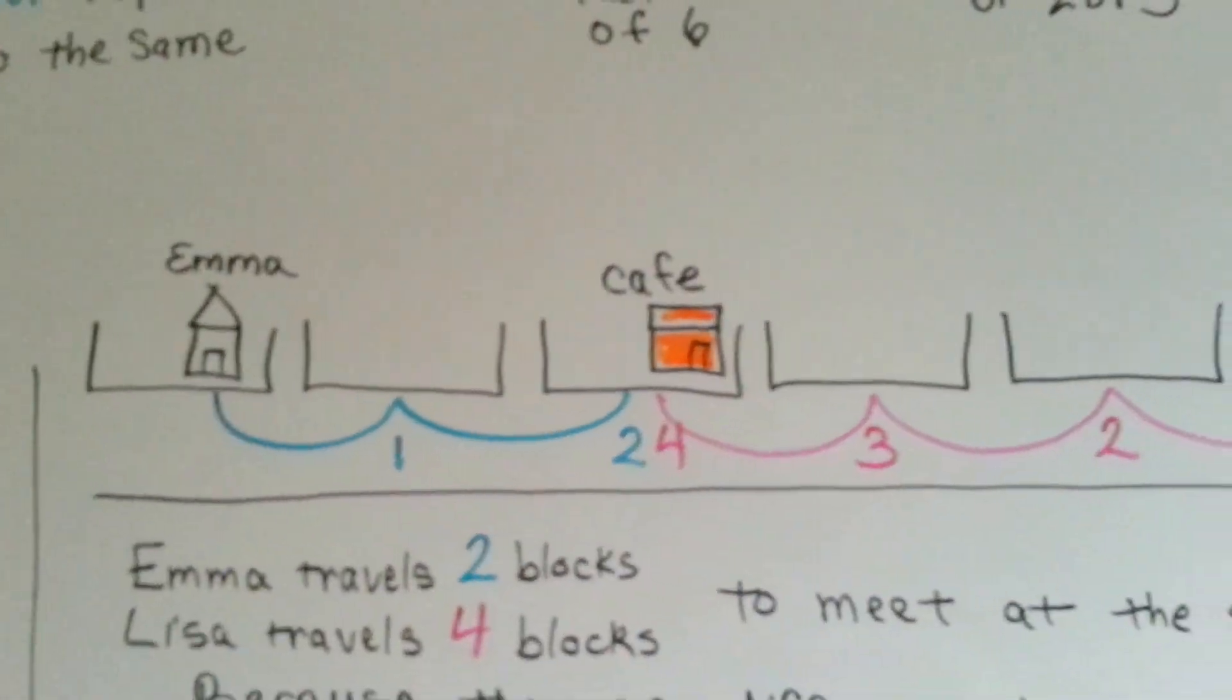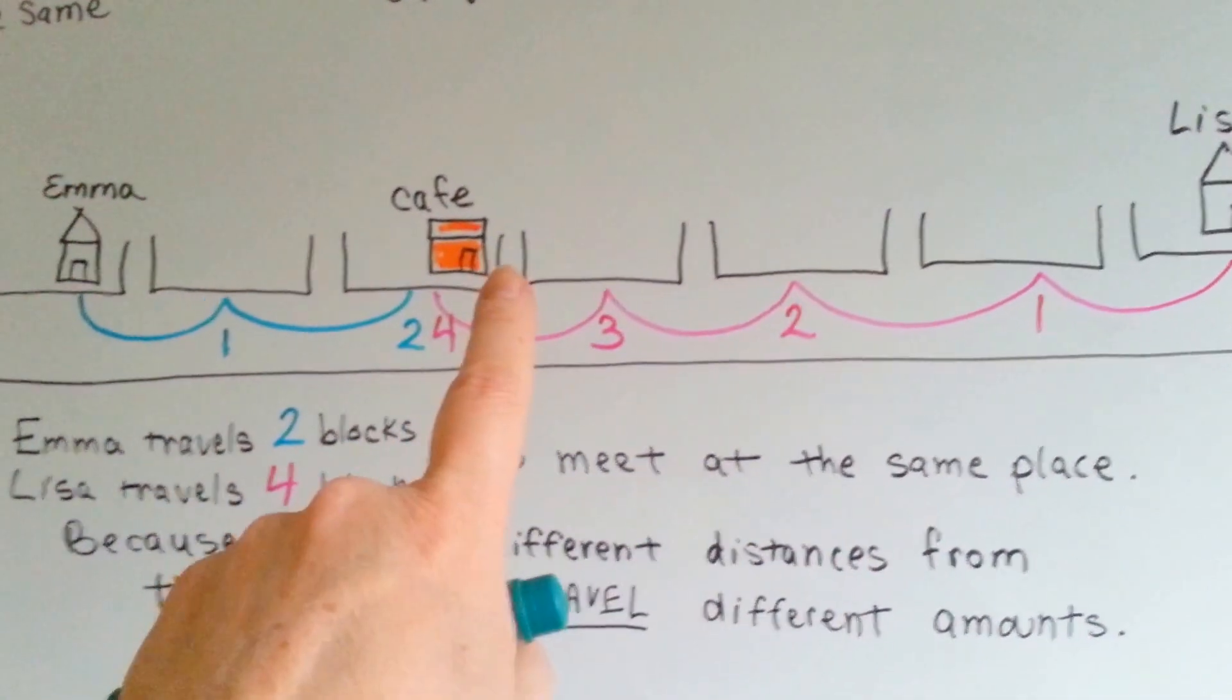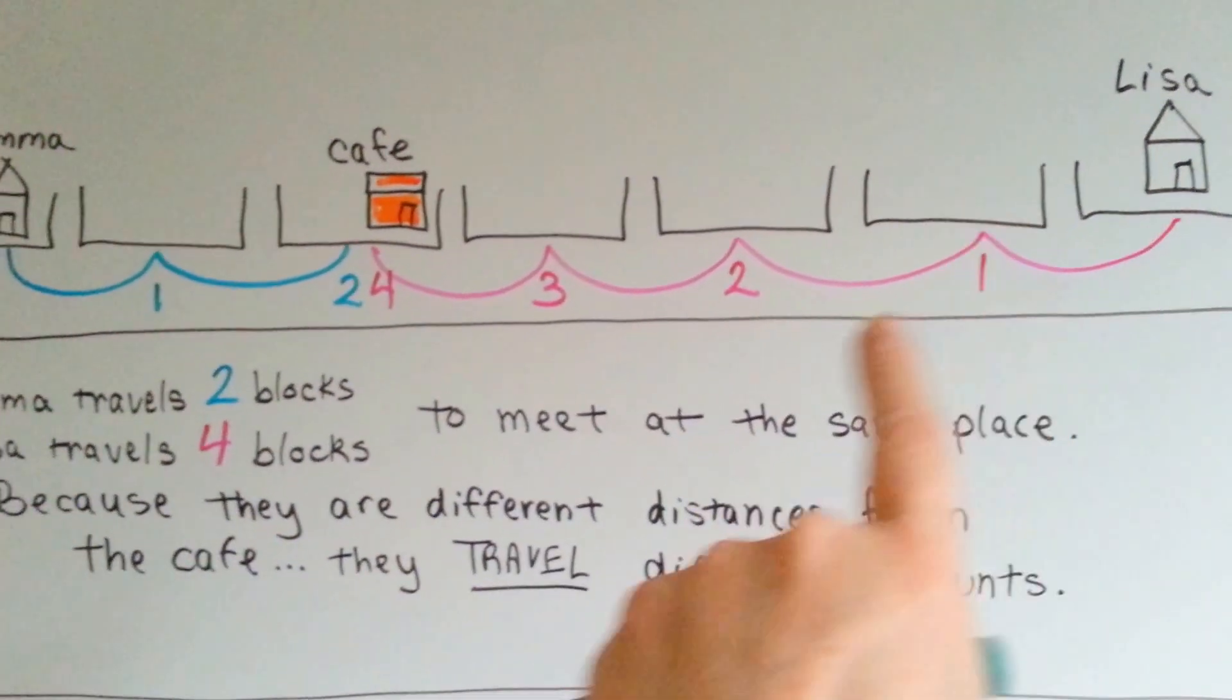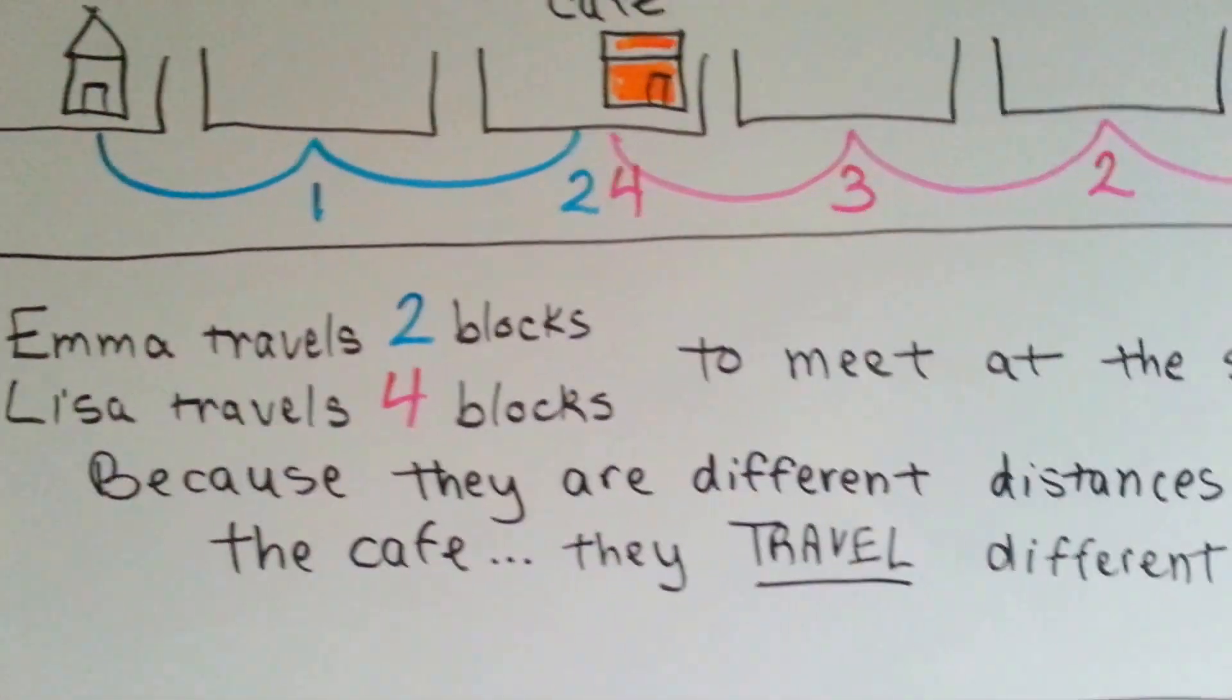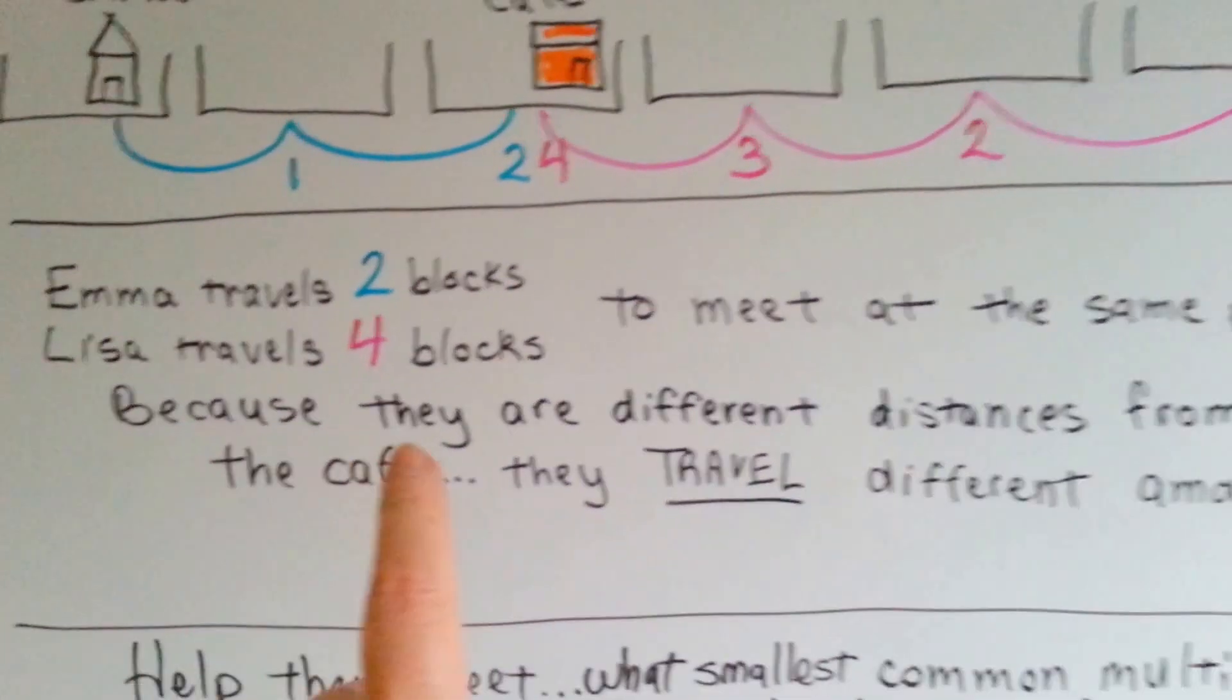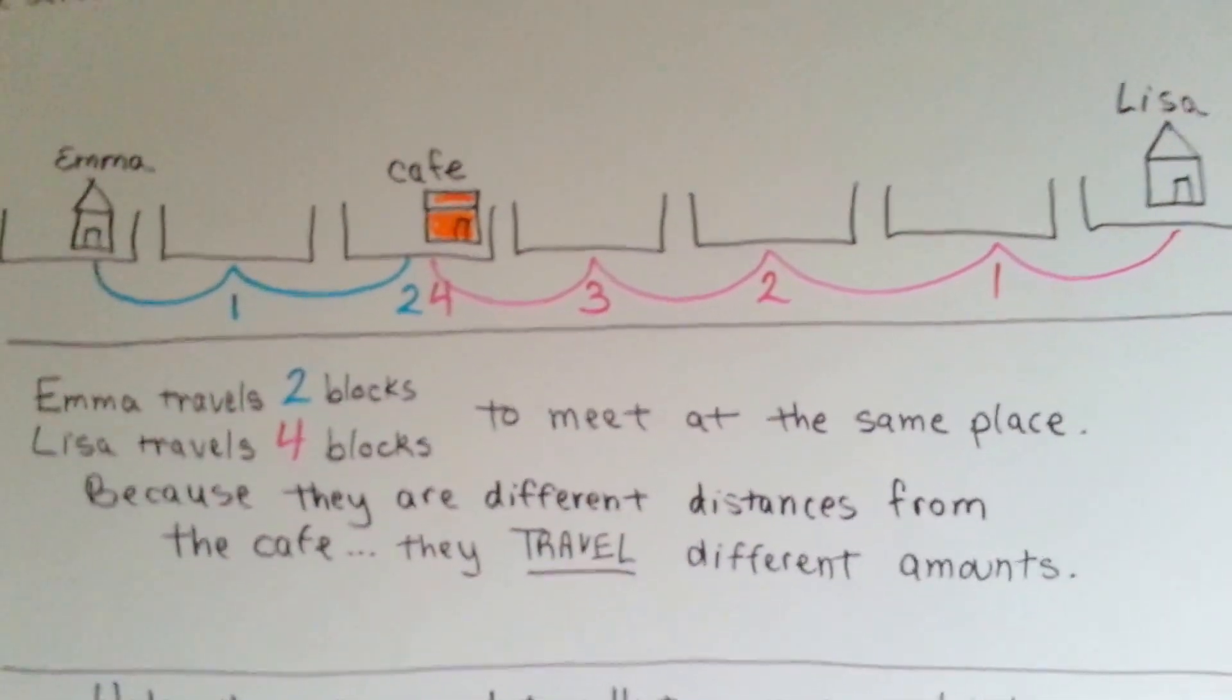I'll show you why. Let's say that Emma and Lisa called each other on the phone and said, let's meet at the cafe. Emma went 1, 2 blocks to get to the cafe, and Lisa went 1, 2, 3, 4 blocks to get to the cafe. Emma travels 2 blocks, Lisa travels 4 blocks to meet at the same place. Because they are at different distances from the cafe, they travel different amounts.